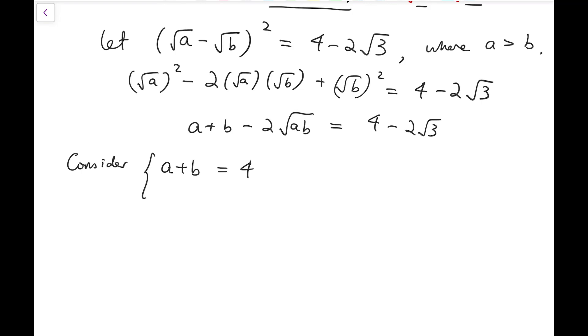So I can consider this system. This is the first equation. Well, the second equation is that ab equals 3. So then I'm actually forcing a plus b and 4 to be like terms, while root ab and root 3 are another pair of like terms.